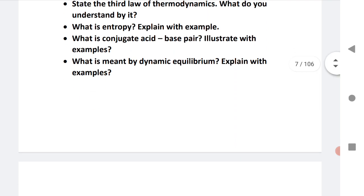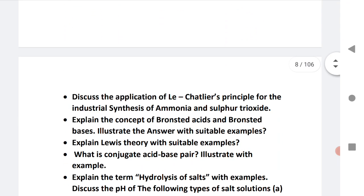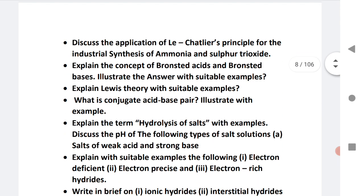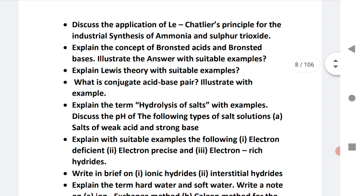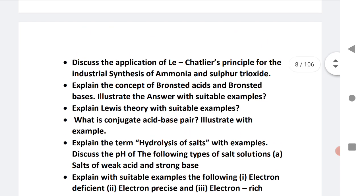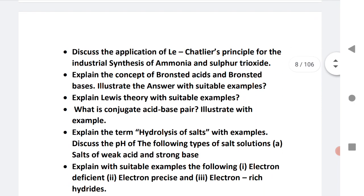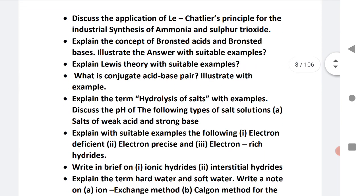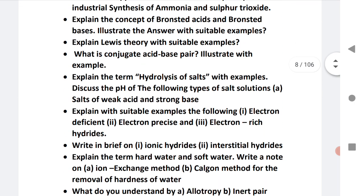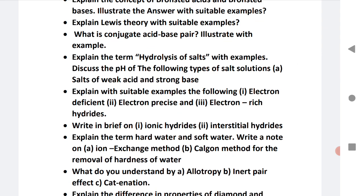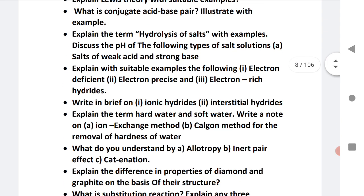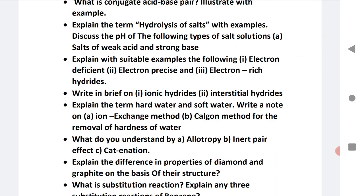What is entropy? Explain with example. What is conjugate acid-base pair? Illustrate with examples. Dynamic equilibrium, Le Chatelier principle, the concept of Bronsted acid and Bronsted bases, Lewis theory. Conjugate acid-base pair may be repeated twice.